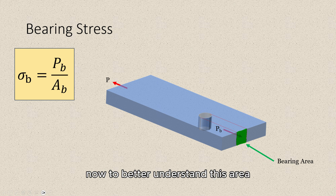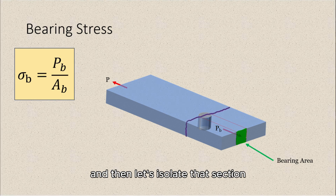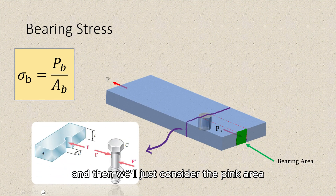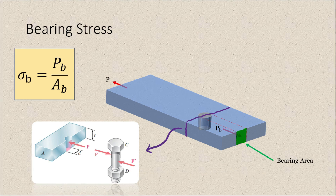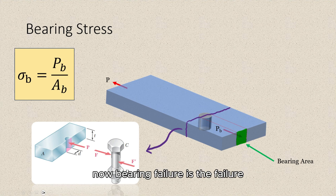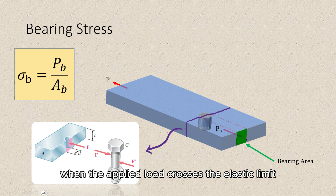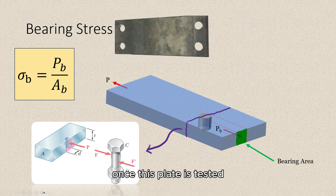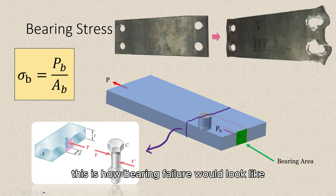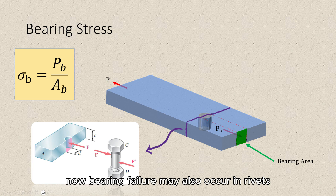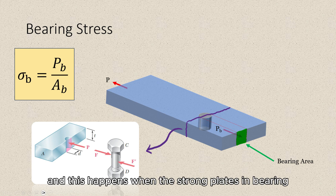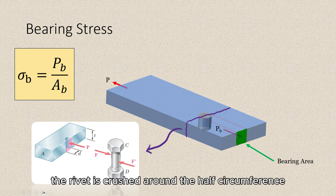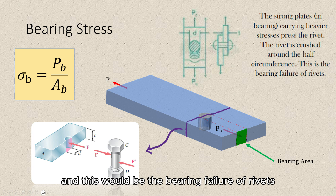To better understand this area, let's make a cut and isolate that section. We have the diameter and the thickness, and we consider just this projected area. Now, bearing failure is the failure which occurs in the plate when the applied load crosses the elastic limit. Once the plate is tested, this is how bearing failure would look. Bearing failure may also occur in rivets — this happens when strong plates carrying heavier stresses press the rivet. The rivet is crushed around the half circumference, and this would be the bearing failure of rivets.